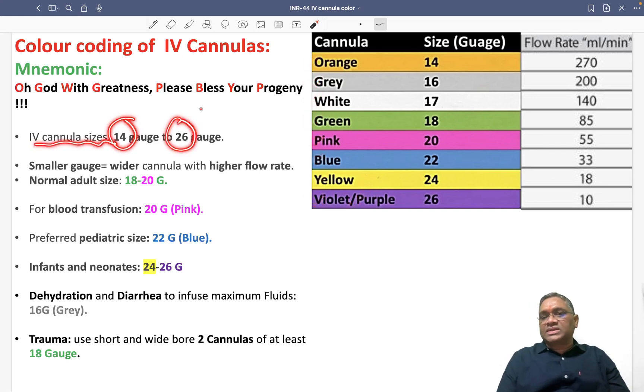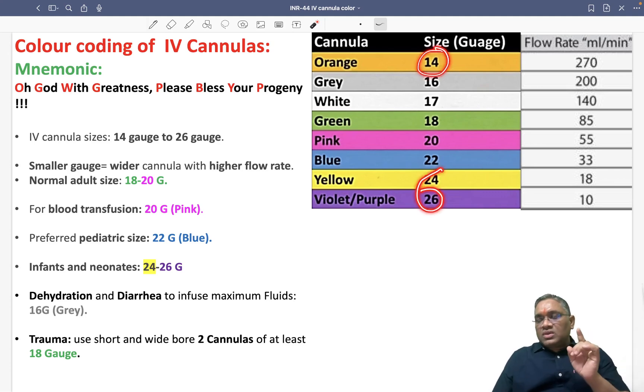Remember, IV cannula sizes range from 14 to 26 gauge. You can see they range from 14 to 26 gauge. You can add 2 each time: 14, 16, 18, 20, 22, 24, 26.